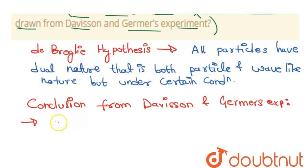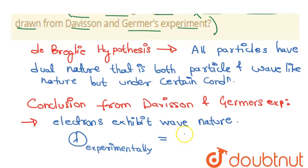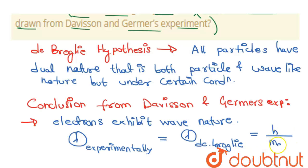Conclusion from the Davisson and Germer experiment: they concluded that electrons exhibit wave nature. They also determined that the wavelength experimentally obtained was equal to the de Broglie wavelength, that is, h over the mass of the electron multiplied by the velocity of the electron.